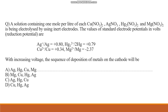The reduction potential values given are 0.80, 0.34, 0.79, and -2.37. Among all these four values, 0.80 is the highest, so silver would come at the first position — silver would reduce first. Looking at the options, silver is written at first position in options A and C.